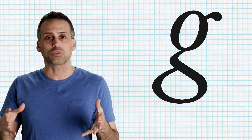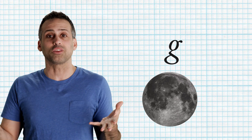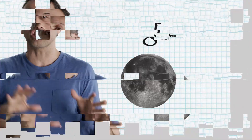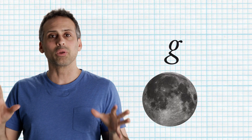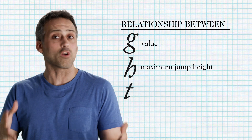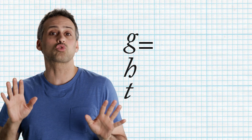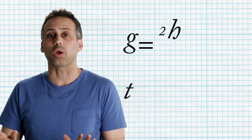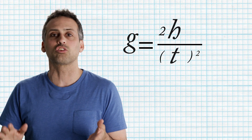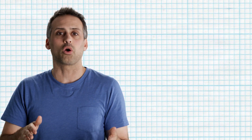A planet's surface gravity has a huge effect on how high you can jump on that world. Low gravity, for instance, is why astronauts in heavy space suits could jump so high on the moon. But on any given planet, there's a simple relationship between its g value, the maximum height you reach during a jump from the surface of that planet, and the amount of time it takes you to reach that height: G equals twice the height divided by the square of the rise time. We're going to use this formula to measure g on Super Mario World.